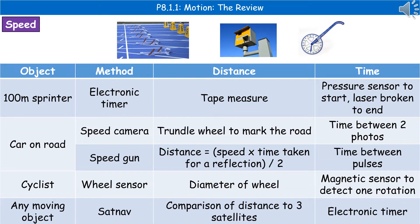If we're thinking about a car, we've got the speed camera or speed gun. We could use a trundle wheel to mark the road for our speed camera, and then when it takes photos it actually takes two photos very shortly one after the other. The time between the two photos is known, we know the distance between the marks on the road, so it can then calculate the speed the car was going.